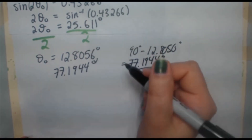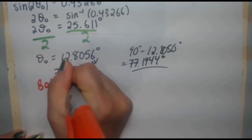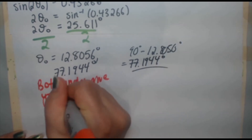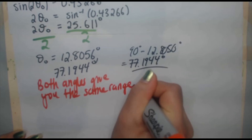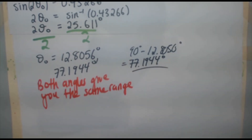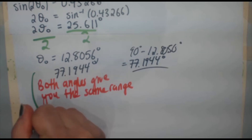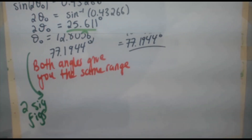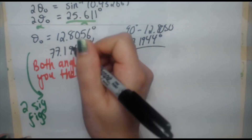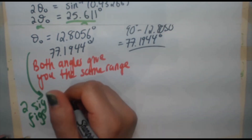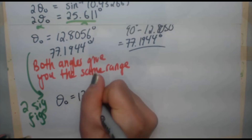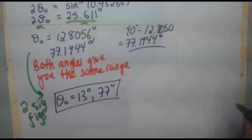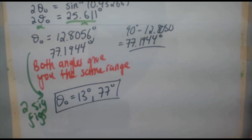Accounting for significant figures — the original problem had two sig figs — we round to theta-naught equals 13 degrees and 77 degrees. Both angles give the same range. That does it for this video. There are your two angles. Be sure to give the like button a click and subscribe to Physics in the Flesh so you never miss a video.